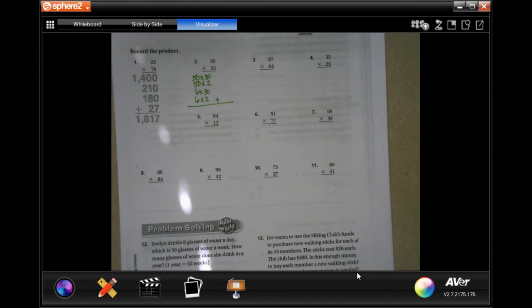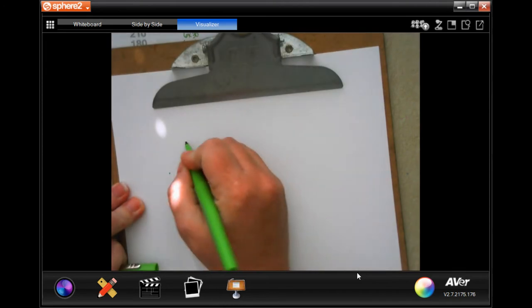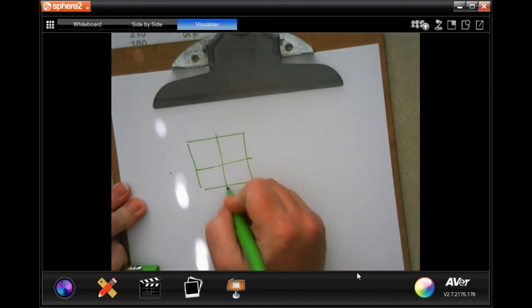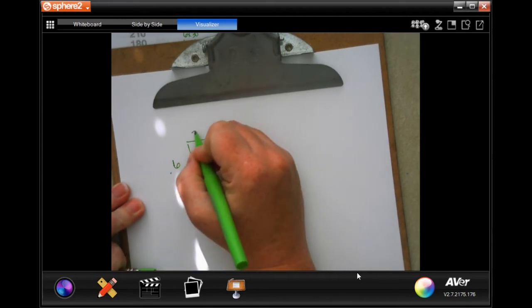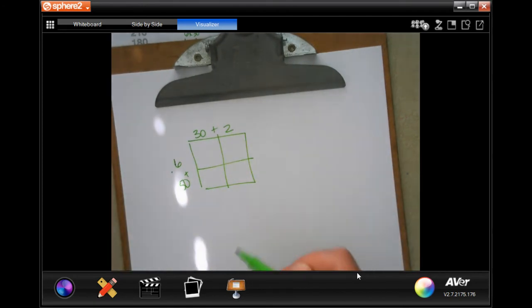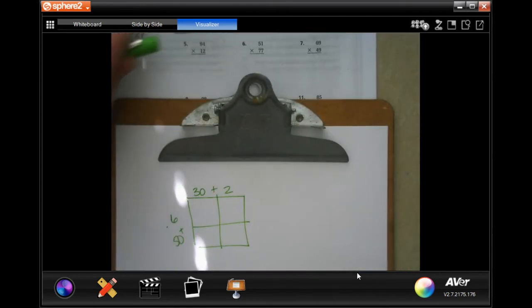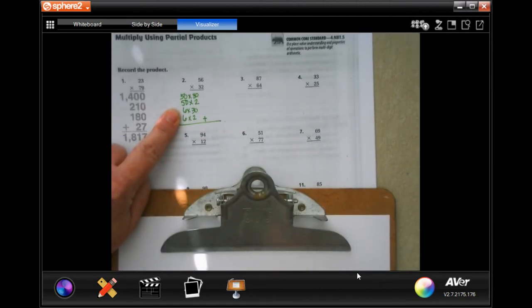When it's talking about multiplying using partial products, it's wanting you to do what we were doing, multiplying with the boxes minus the boxes. Whereas with the boxes, it would be 50 plus 6 and 30 plus 2, and you would do that multiplication. I want you to do that where you're doing it minus the boxes.